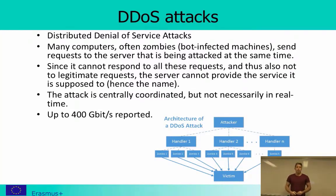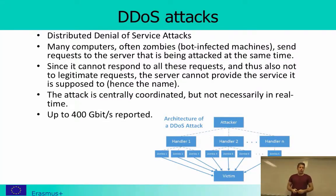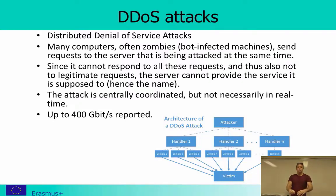This is most often done by sending a lot of requests from all over the world — that is why it's called 'Distributed' — sending requests to that machine all at the same time. The request can be legitimate, for example for a website, or illegitimate. It doesn't really matter — the server will receive so many requests that it's unable to answer them.